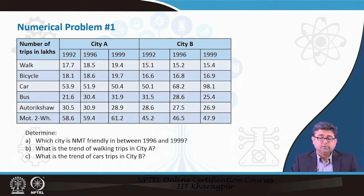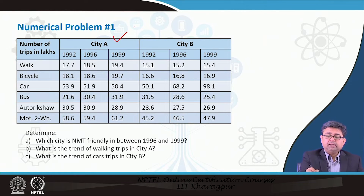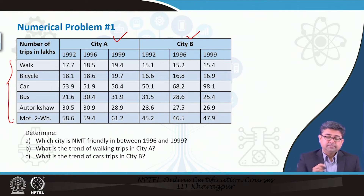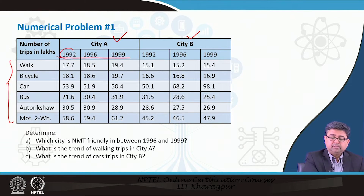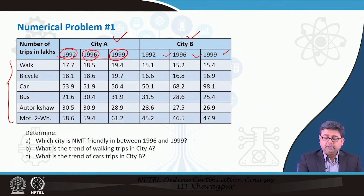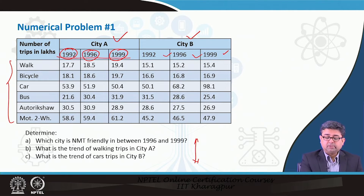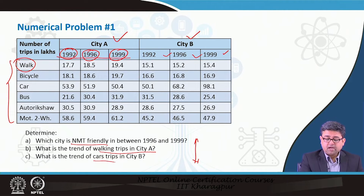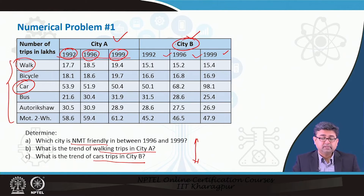Here is a numerical problem with data from two different cities showing different modes used over three time periods. Based on this data, we need to determine: which city is NMT-friendly between 1996 and 1999; what is the trend of walking trips in City A; and what is the trend of car trips in City B.